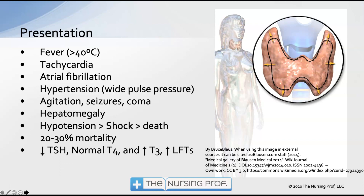Hypertension occurs with a wide pulse pressure — the systolic pressure rises while the diastolic pressure may remain fairly low, as we are seeing increases in cardiac output rather than vasoconstriction. Hepatomegaly, hypotension, shock, and death will eventually occur as the patient runs out of glucose. This increase in metabolism causes the patient to use up large amounts of glucose, and as glucose is depleted in the brain, the patient can progress to hypotension, shock, and death.